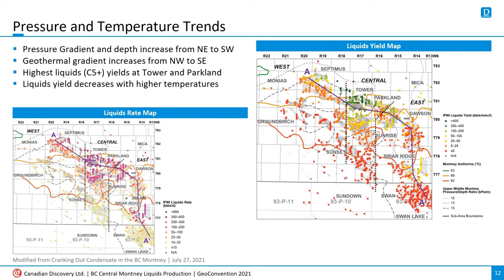Next, we'll take a closer look at how pressure and temperature affect liquid yields. Temperature increases from north to south, and the green, orange, and red lines indicate the key isotherms that signal the transitions between oil, wet gas, and dry gas. The pressure gradient increases from northeast to southwest. All wells in the study area are within the overpressured deep basin, with pressure gradients above 10 kPa per meter. With the yield map on the right, we see that most of the green dots with the highest liquids yields are concentrated at Tower and Parkland. Yields decrease dramatically as we move down-dip toward the deeper, warmer areas including Ground Birch, Sunset, and Swan. We divided the study area into three sub-areas, labeled west, central, and east on the map. The west is characterized by lower temperatures and higher pressures, while the east is characterized by higher temperatures and lower pressures.